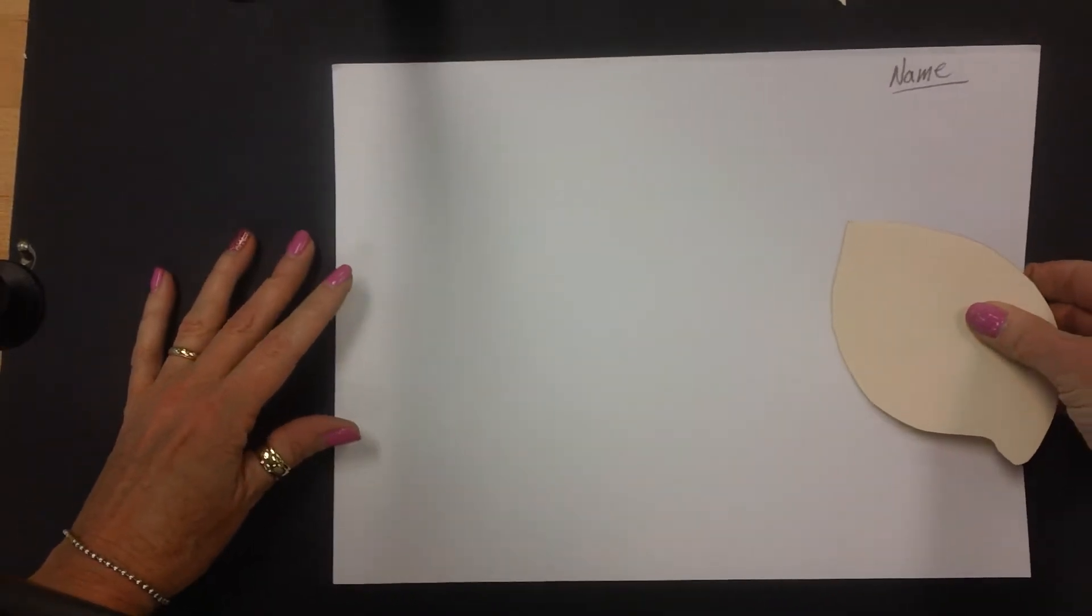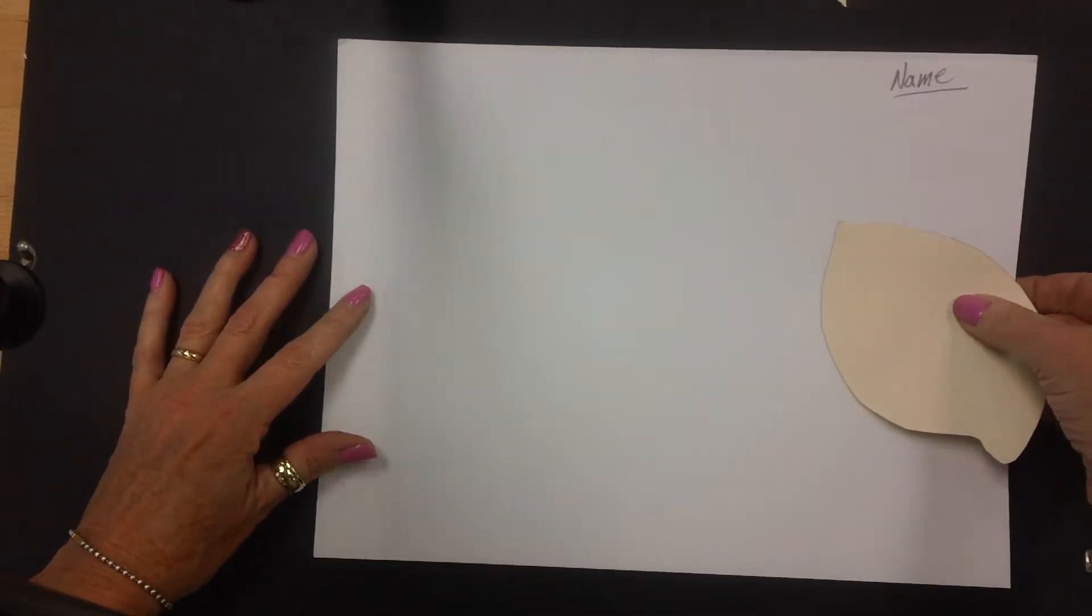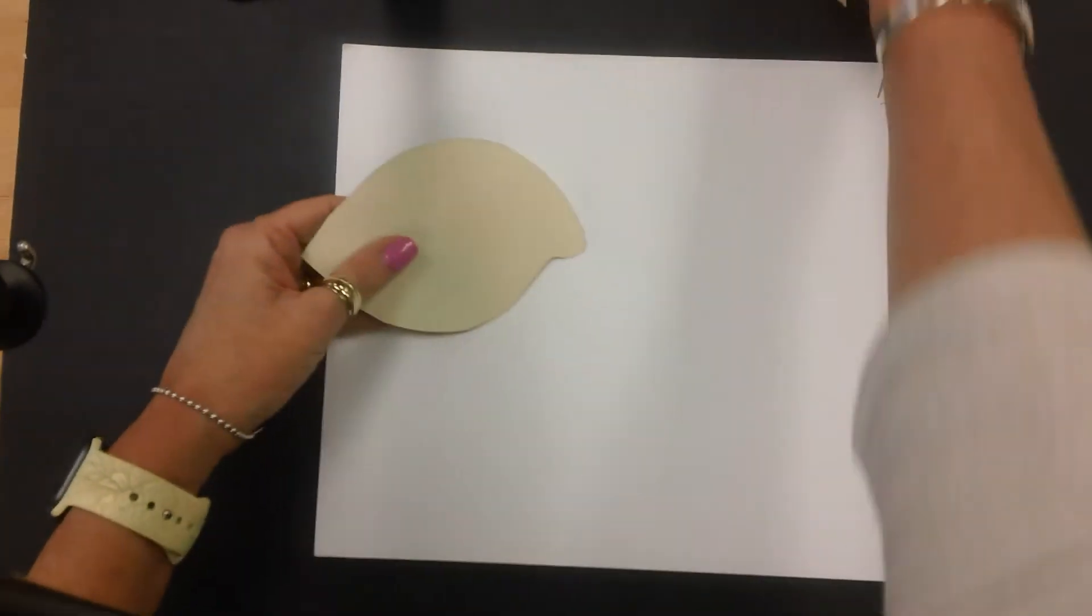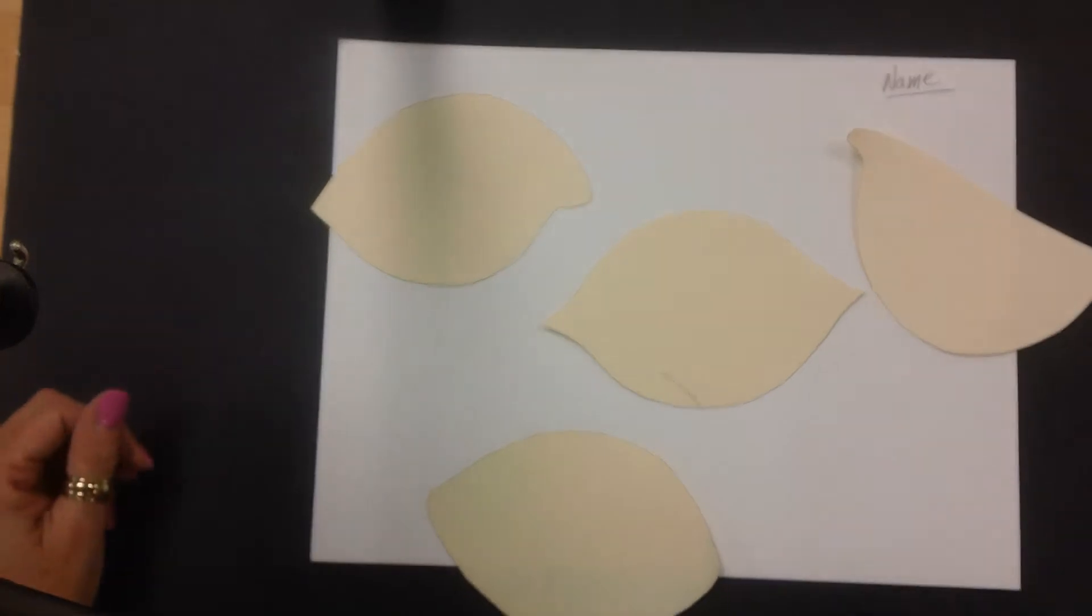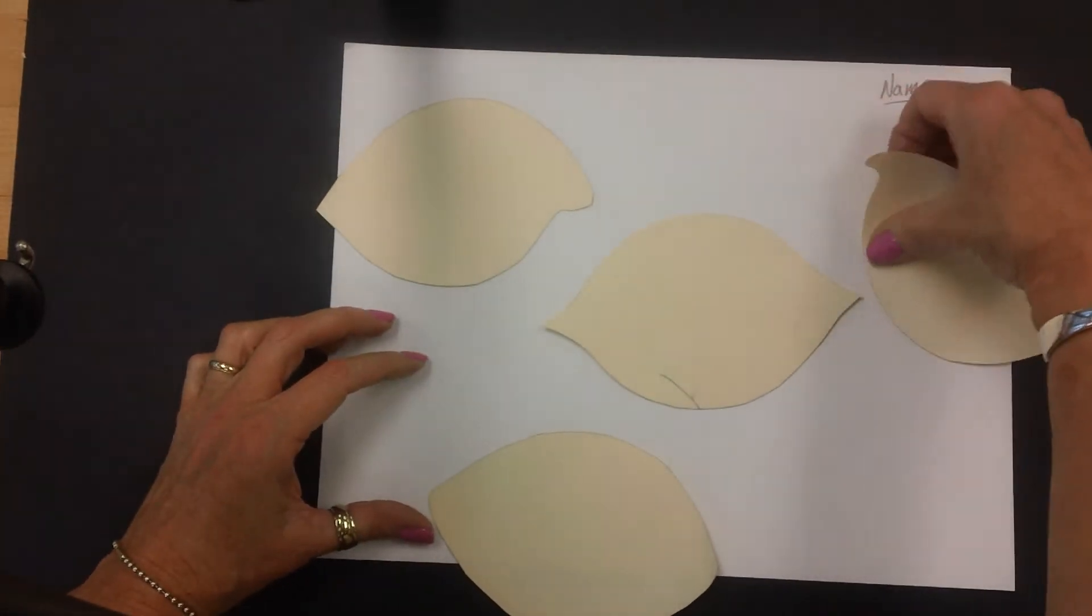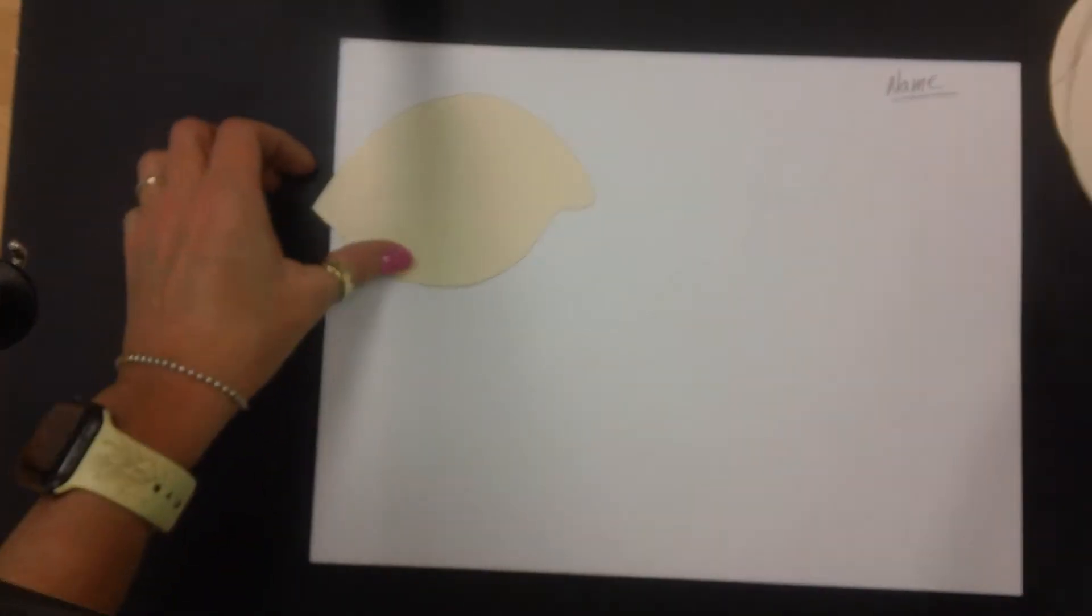It can be on the front of this paper if you'd like because later on we will be cutting these things out. You're going to have a couple different eye shape tracers to pick from. And I'm going to use this one.